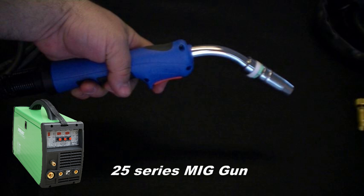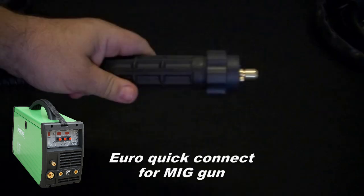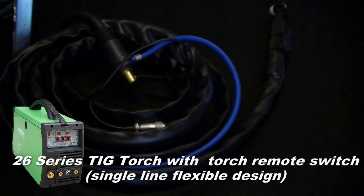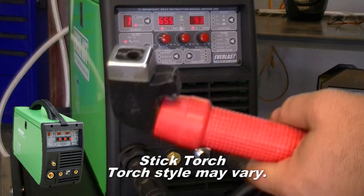The Everlast MTS comes with about everything you need to weld and includes the following: 25 series MIG gun, Euro quick connect for the MIG gun, 26 TIG torch with torch remote switch,